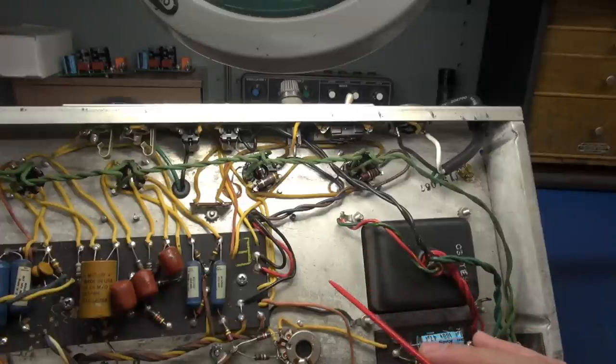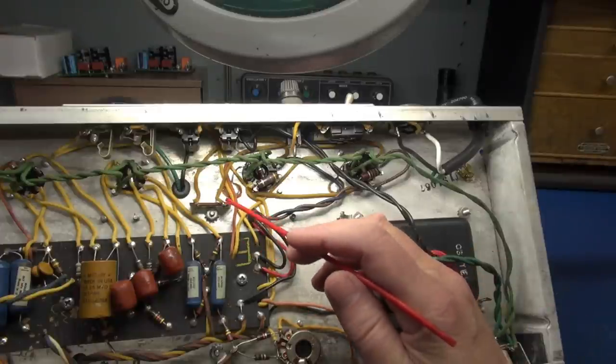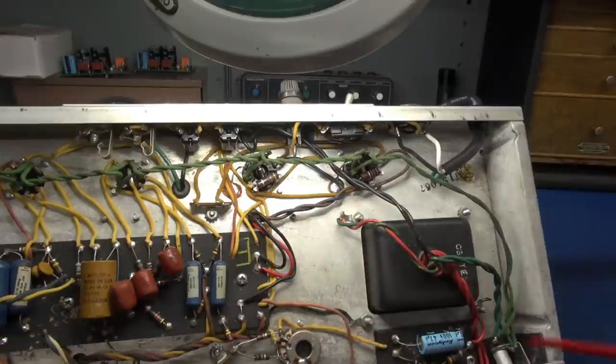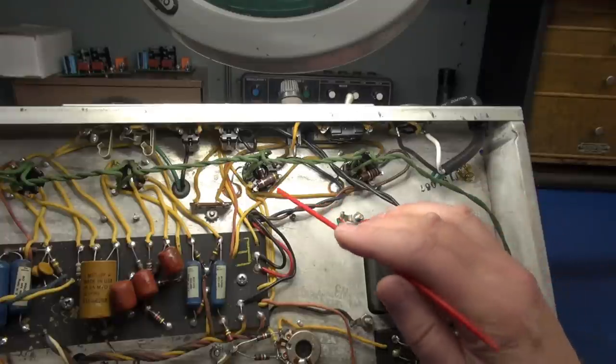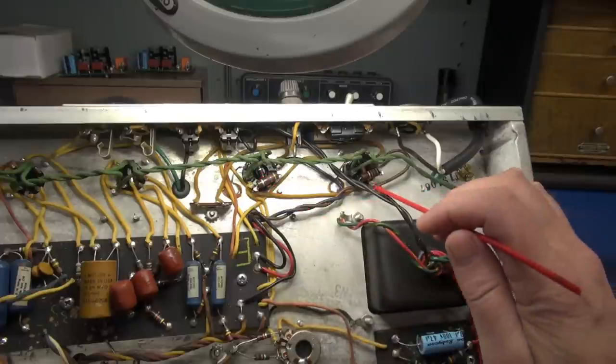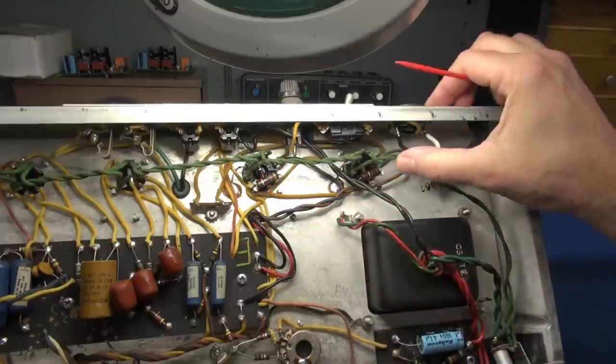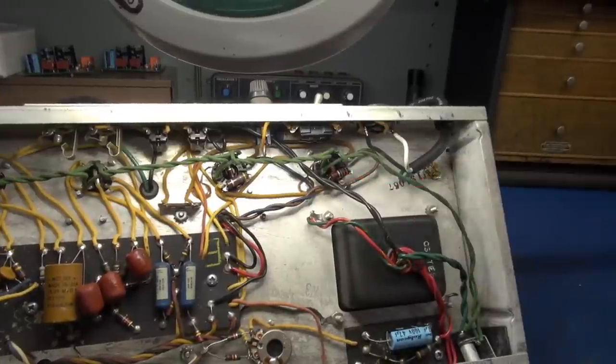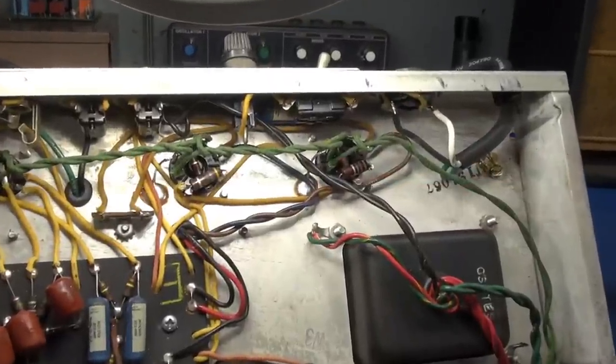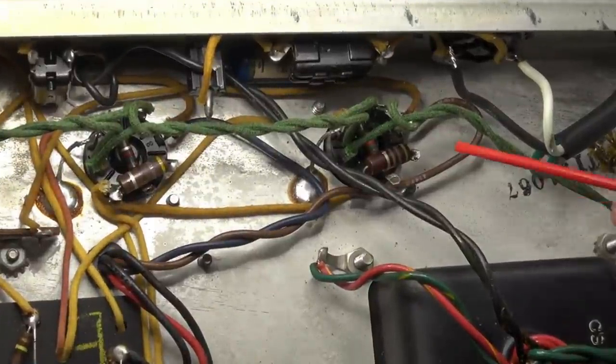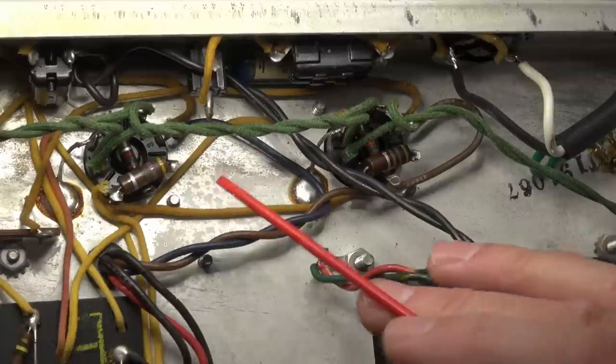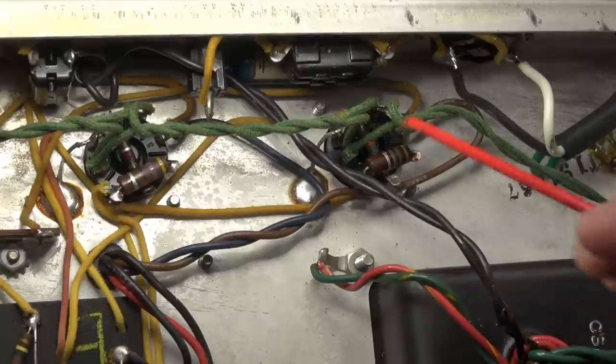So somebody has been in this amp in the past doing some work. There's normally some resistors that come off of this terminal board. Somebody abandoned that circuitry, which is fine. But what I'm looking at are these screen resistors. You can see there's two different types installed, but this one seems to have a little black mark right in the center of it. I wonder about the value of these screen resistors and why has this one been replaced? Let's investigate that.